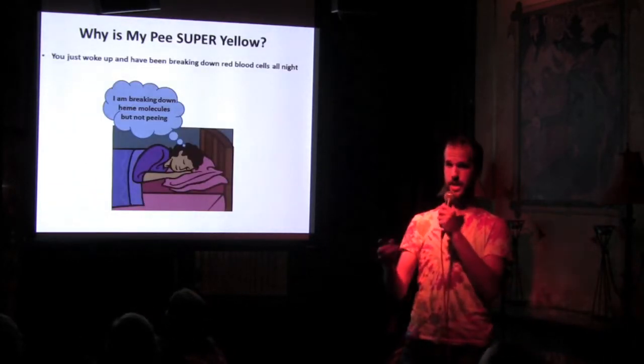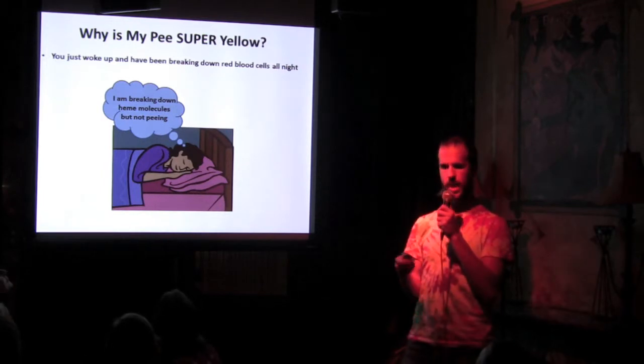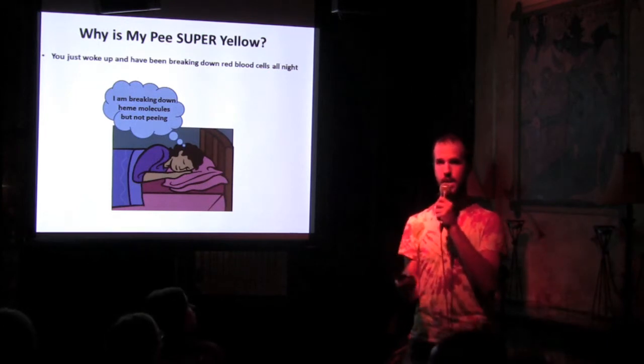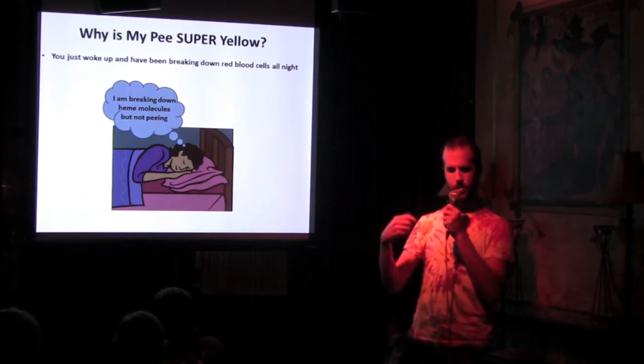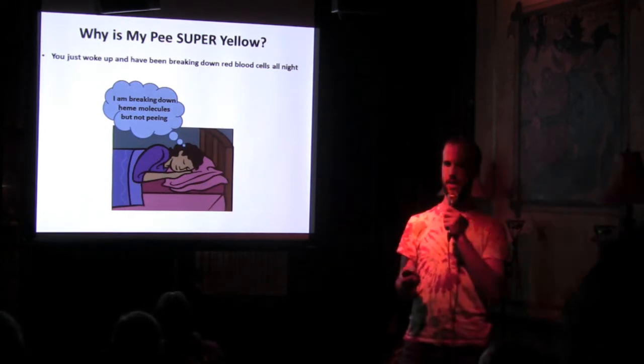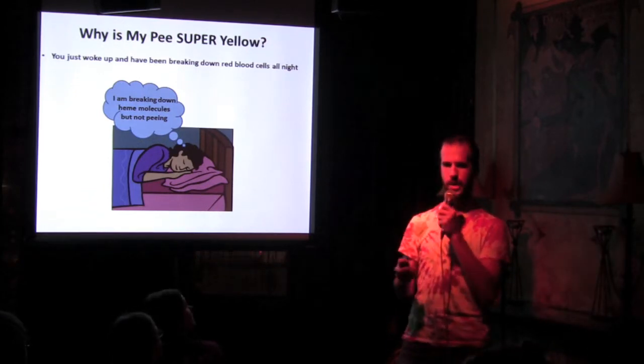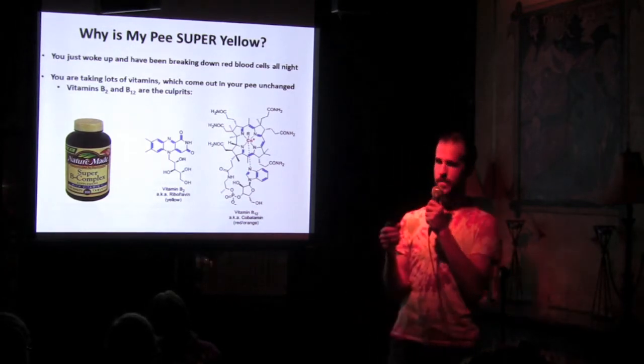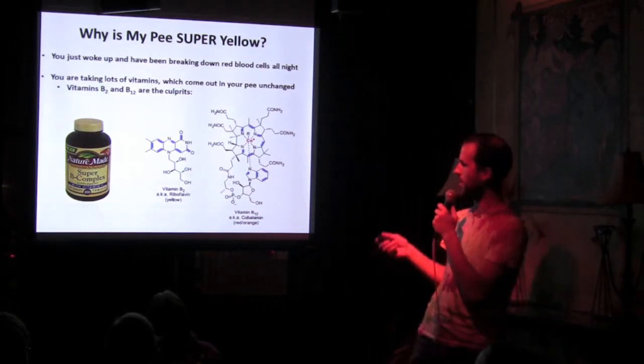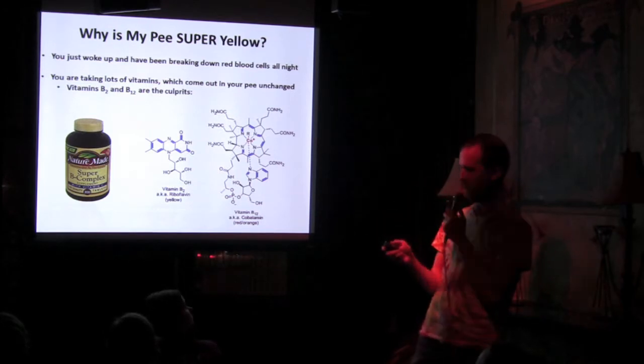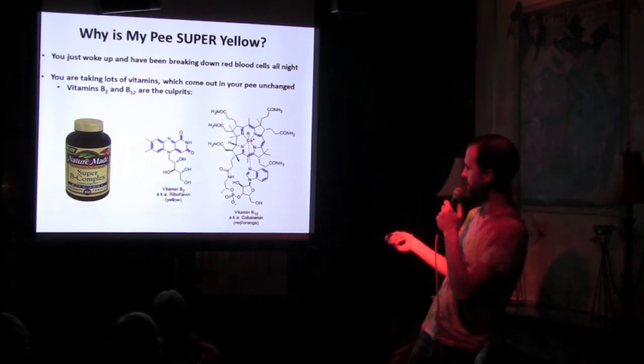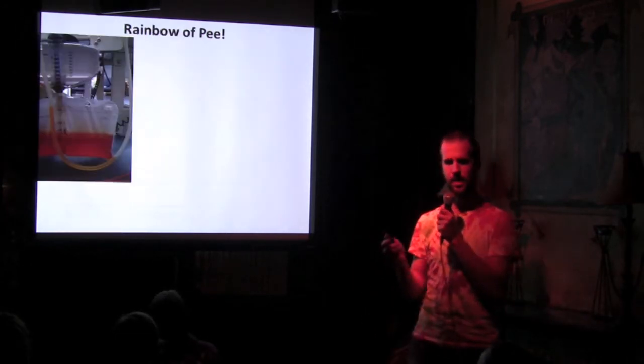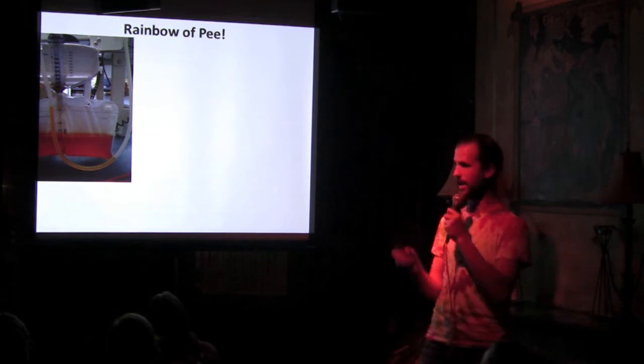And so what if your pee is really yellow? So that could be due to a number of things, one of which is you are sleeping all night, and you are not peeing, hopefully. And then your body was breaking down blood cells, and then you have to spit out the urobilin in the morning. Another reason is you're taking vitamins. And the vitamins, the culprits for that intense yellow color are vitamins B2 and B12. You can see all the alternating single and double bonds there. And then the metal, these make these chemicals yellow.